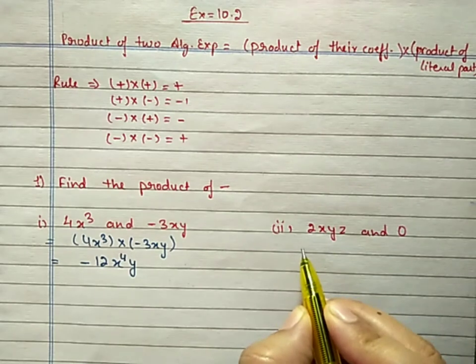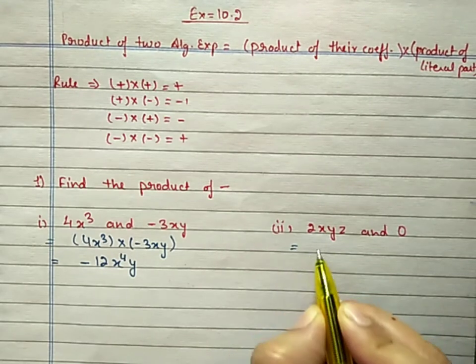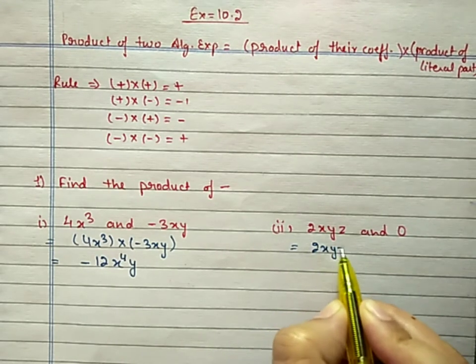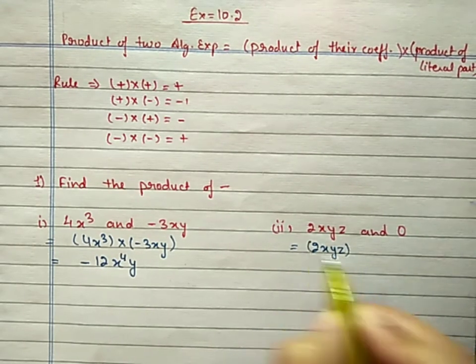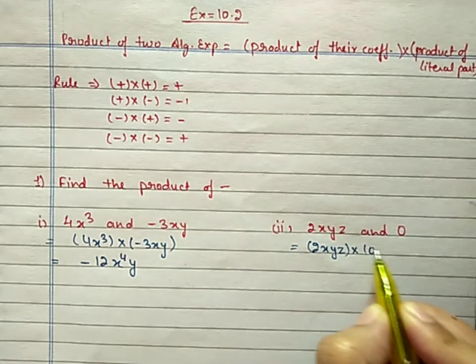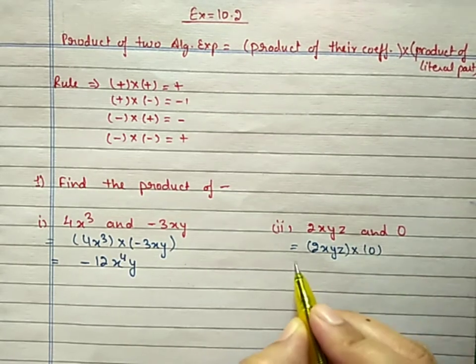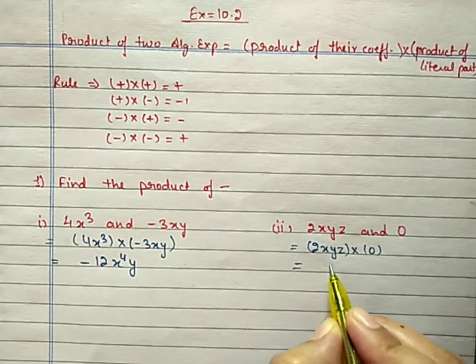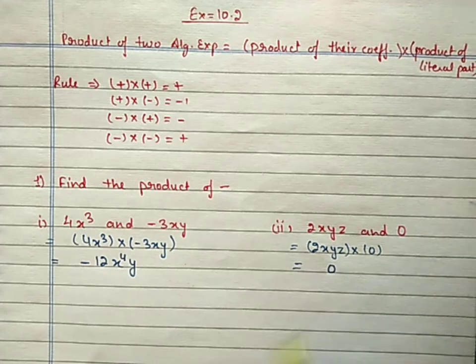Second part: 2xyz multiplied by 0. We know anything multiplied by 0 will become 0.